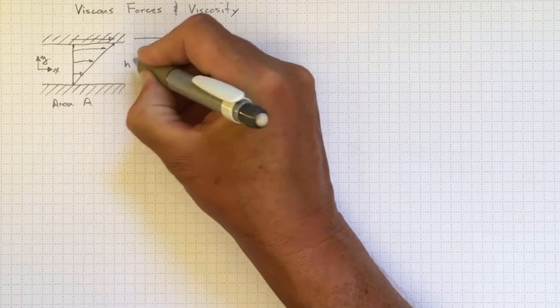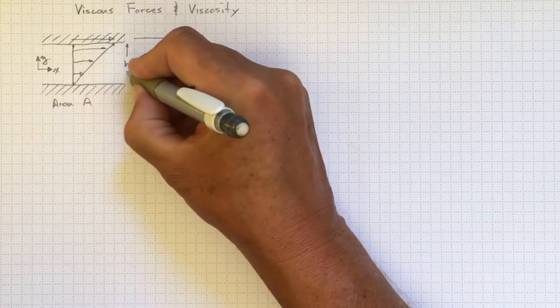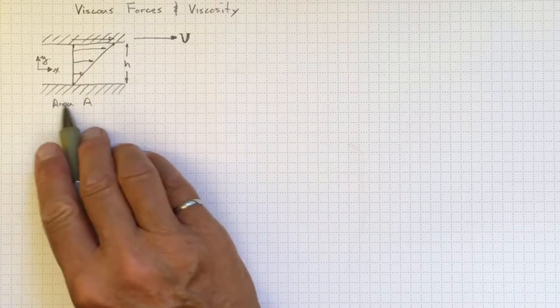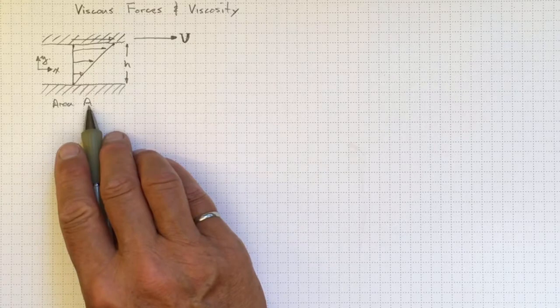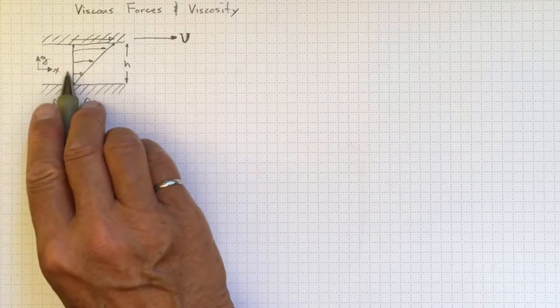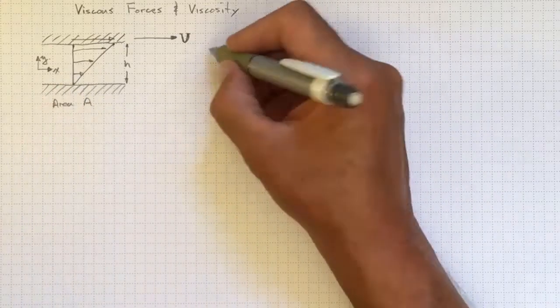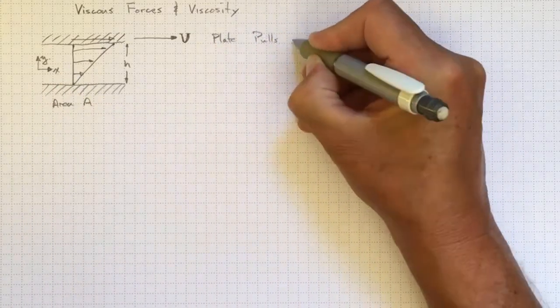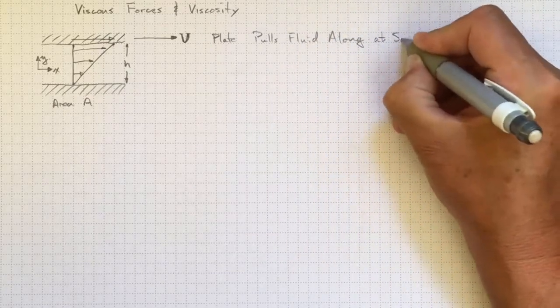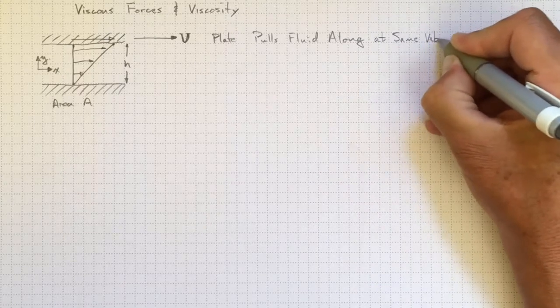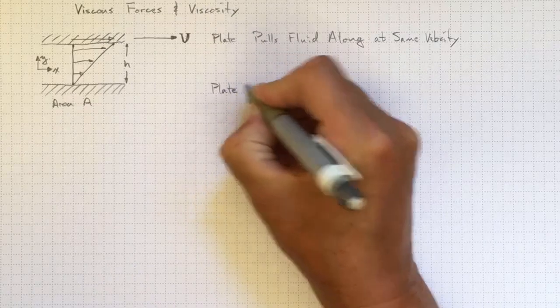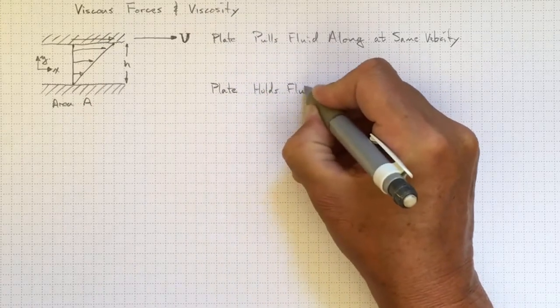Now, we can think of the gap between these two plates as some height h, the thickness of this layer of fluid in between the two plates. There's a surface area of the plates that's area A. They're located in this coordinate frame of reference with Y going up and X going across as usual. And this top plate pulls the fluid along at the same velocity. This bottom plate holds the fluid stationary.